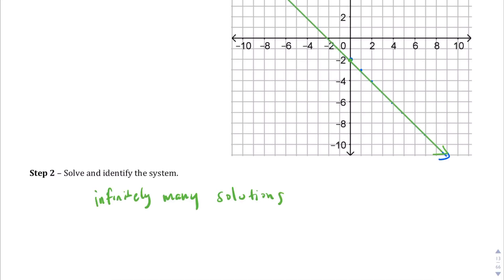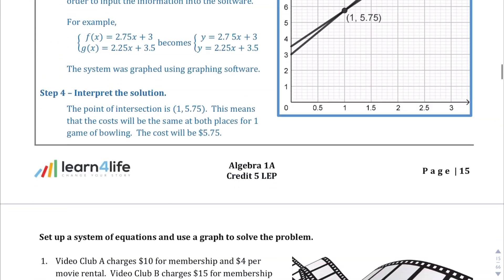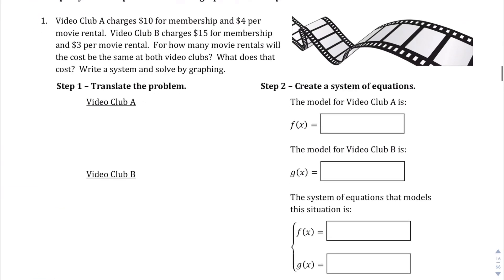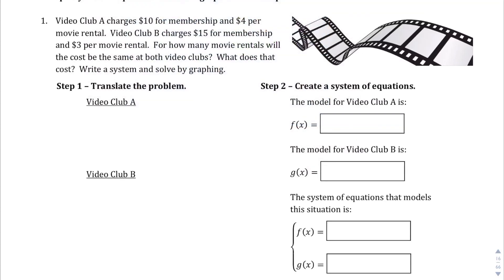Jumping to page 16, we have a real-world context. Video Club A charges $10 for membership and $4 per movie rental. Video Club B charges $15 for membership but only $3 per movie rental. The question asks: for how many movie rentals will the cost be the same, and what is that cost?